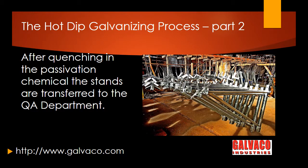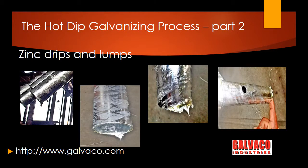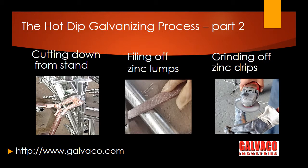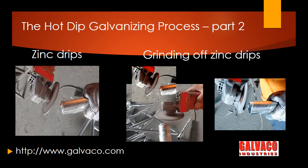Going back to the hot dip galvanizing process — after the final treatment in preservation chemical, the iron and steel products are transferred to the quality assurance department, and the articles are removed from the jigs with wire cutters or unhooked from chains. The galvanized articles are checked for uncoated areas and sharp zinc drips at drained-out points, which is solidified pure zinc. The pure zinc freezes as it is still draining from the article going into the preservation chemical. These sharp zinc drips or lumps are easily removed by an electric grinder or manually with a file.